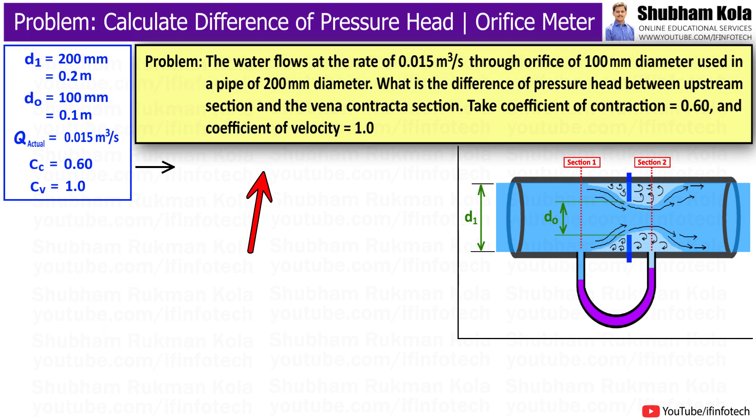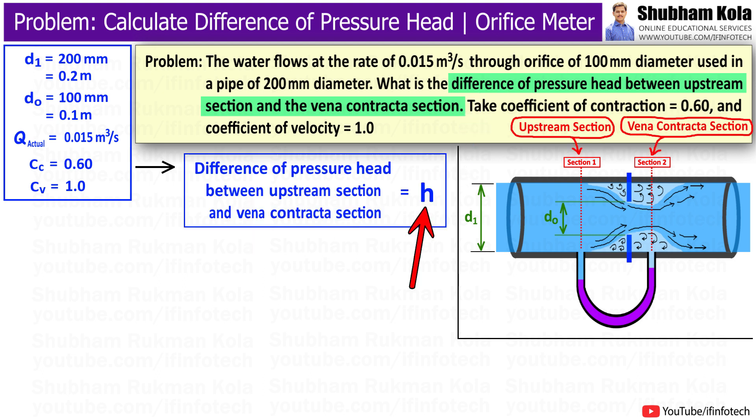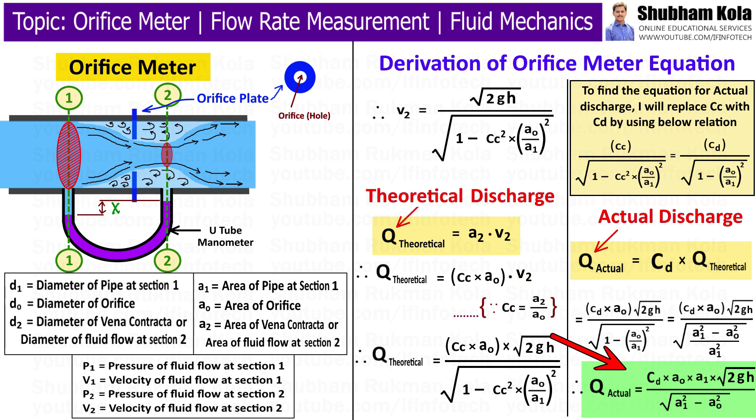In this problem, we want to find the difference of pressure head between section 1 and 2, which is denoted by h. We can calculate h with the help of the discharge formula that we derived in the previous video.